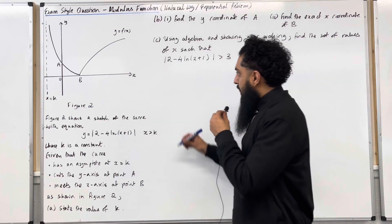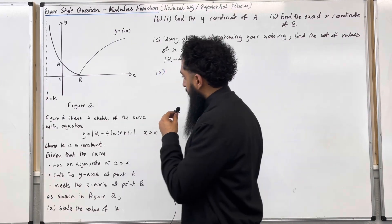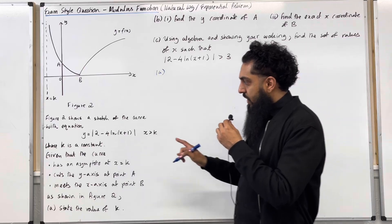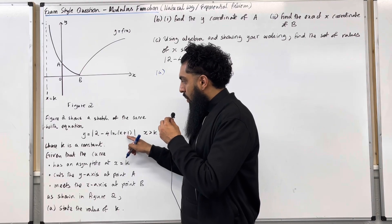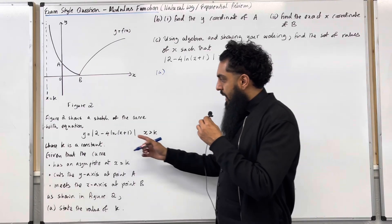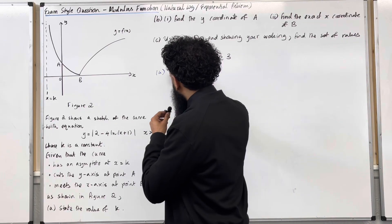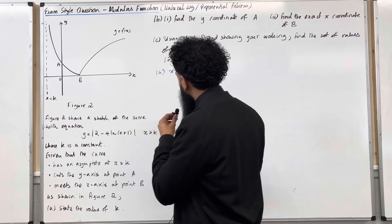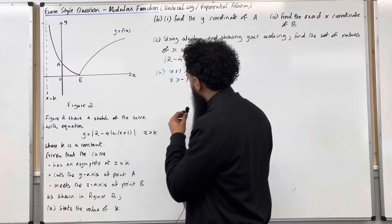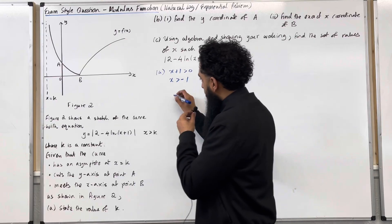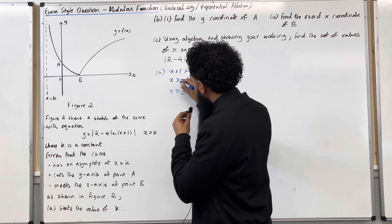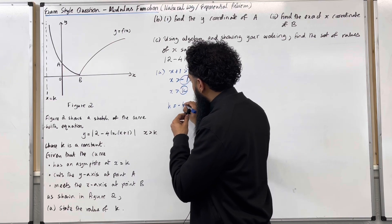Let's have a look at the solution to part A. To work out the value of k, we need to go back to what's inside the natural log. We can't take ln of 0 or ln of a negative. So the x plus 1 must be more than 0. Solving this inequality, x is more than minus 1. We are told x is more than k, hence k equals minus 1.